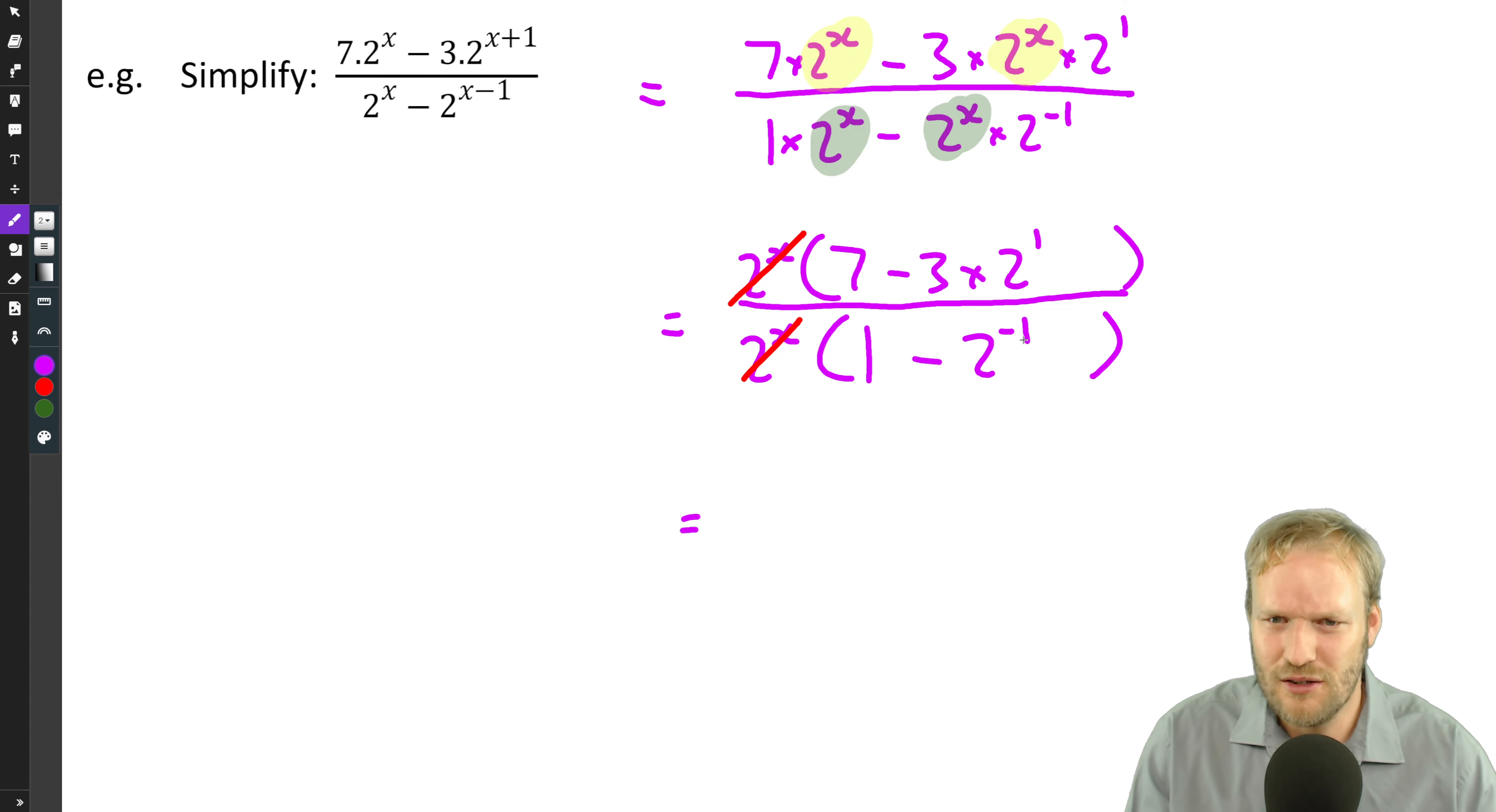And equals, well, this whole shebang here, we can just punch in the calculator or do it in your head. But maybe safer just to put in the calculator. Instead of going seven minus six, well, that's one. This thing here is one minus a half. That's a half. One divided by half is two. But may as well have just punched in the calculator.